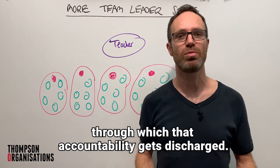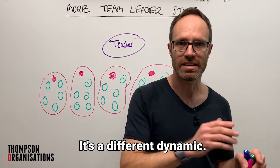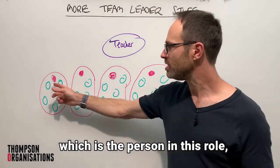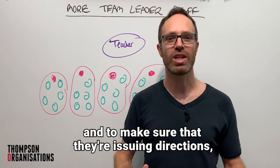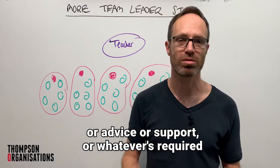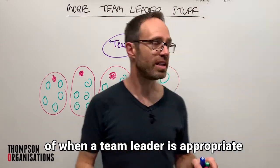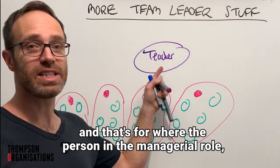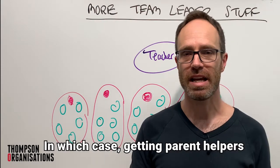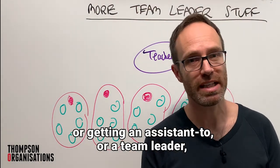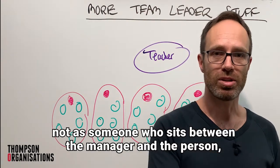Us parents who are there are the leaders through which that accountability gets discharged. Now, in the workplace we are not parents in charge of children — it's a different dynamic. But one part is similar: the person in this role has that little bit extra in terms of future-looking work, has the accountability to see what's going on, and to issue directions, advice, or support to make sure the wishes of the manager get fulfilled. That's where the role is similar. A team leader is appropriate where the person in the managerial role — the role accountable for the work — is not able to discharge their accountabilities due to the numbers and complexity out on the field. In which case, getting a team leader or supervisor is not someone who takes over from the manager or sits between the manager and the person, but someone who's there to assist.